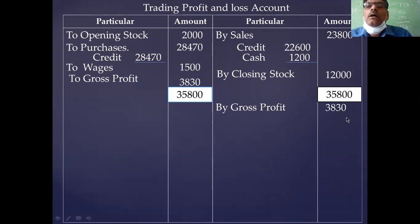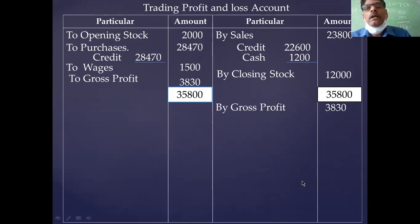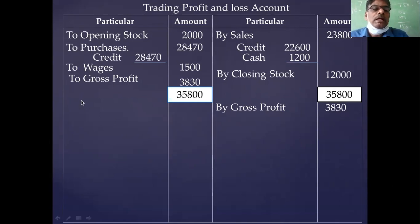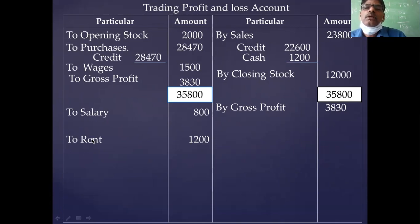Go through the cash book, debtors account, and creditors account for P&L items. Credit side nominal accounts — expenses on the credit side go to the debit side of the P&L account. In the cash book credit side: salary is 800, rent is 1,200. No items from the debtors account or creditors account.